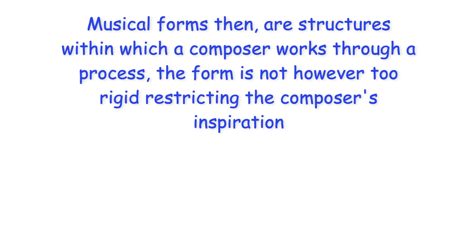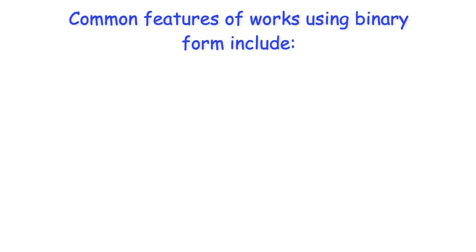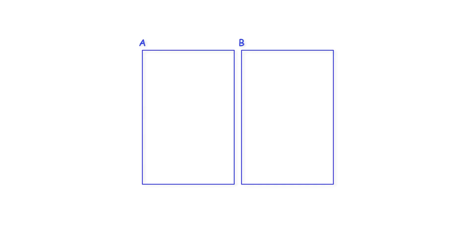The form is not, however, too rigid, restricting the composer's inspiration. Common features of works using binary form include two sections, typically termed A and B.